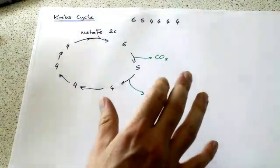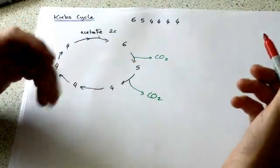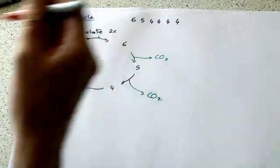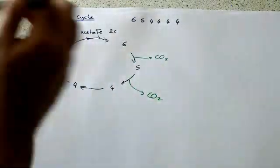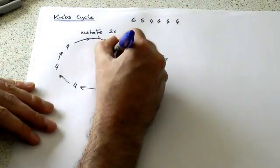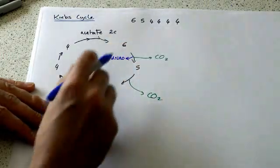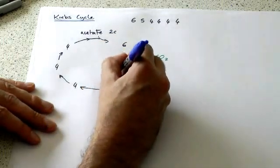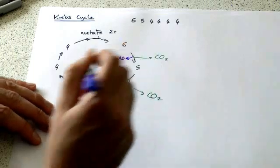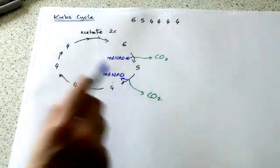If you watch the link reaction, you might remember that when we decarboxylate, we also get hydrogens released. So we must have also got reduced NAD here, and we must also have it here. So we've got two lots of reduced NAD.